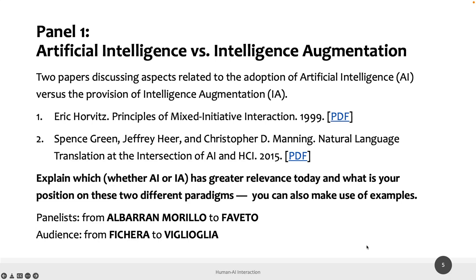Intelligent augmentation uses AI techniques to make humans better and ease their lives, while the other side uses AI to replace humans. You need to take a stance from one side or the other by reading the papers, which provide background and highlight perspectives, pros, and cons of each. In your three slides, explain which of the two has greater relevance today and express your opinion — in a panel there are no wrong answers, just your position on these two different approaches.